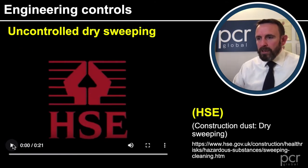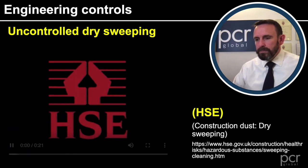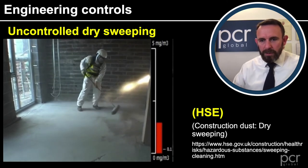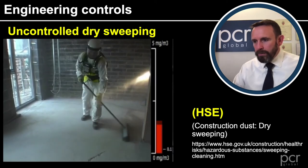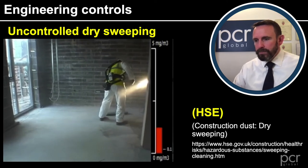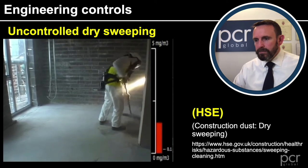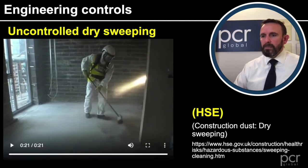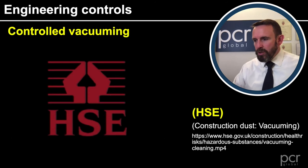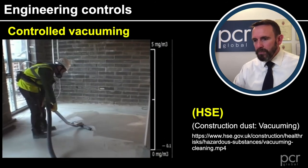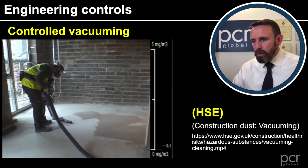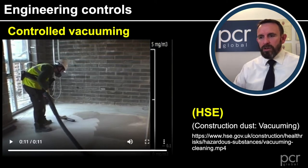And now a video on uncontrolled dry sweeping. Remembering the WEL of 0.1, we can see here it's well above 0.1. Then with controlled vacuuming — it didn't even register on the chart. Well below 0.1.